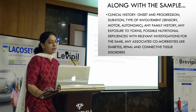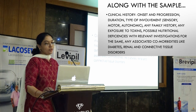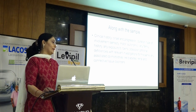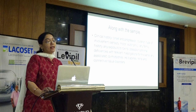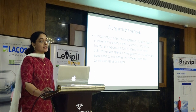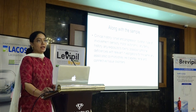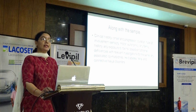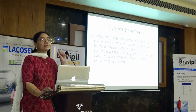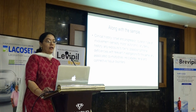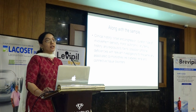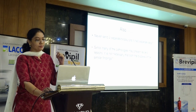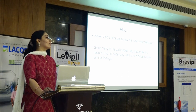Along with the sample, we expect clinical history with respect to onset, progression, duration, and type of involvement — sensory, motor, autonomic. If you tell it is pure motor, then the sural nerve may not show changes. Any family history, any exposure to toxins, possible nutritional deficiency with relevant investigations: if you tell it is B12 deficiency and it is showing acute axonal degeneration, unless you give the value showing actual deficiency, we cannot confirm it is due to deficiency. Any associated co-morbidities like diabetes, renal diseases, or connective tissue disorders should be mentioned. Never send two separate biopsies to two separate labs — since pathologies can be patchy, one bit may have pathology and the other may not, leading to conflicting reports.